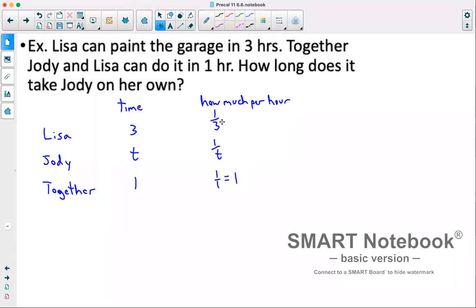The amount Lisa can do per hour plus the amount Jodi can do per hour should equal the amount they can do combined per hour. So we have 1 over 3 plus 1 over T equals 1. Now our common denominator in this case would be 3T, so we'll go through and multiply each term by 3T.